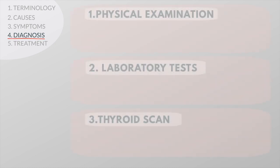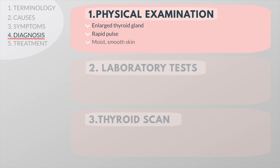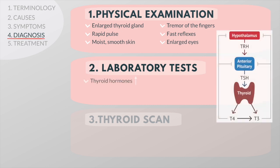If you suspect that your patient has hyperthyroidism, diagnosis is usually a simple matter. A physical examination usually detects an enlarged thyroid gland and a rapid pulse. Look for moist, smooth skin and a tremor of the fingers. The reflexes are likely to be fast and the eyes may look enlarged or bulged.